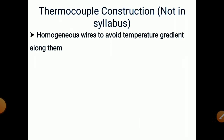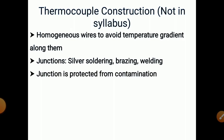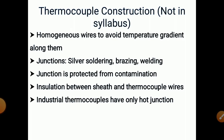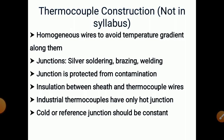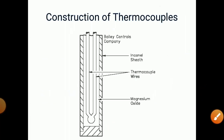For thermocouple construction, homogeneous wires are used to avoid temperature gradient along them. Junctions are provided with silver soldering, brazing, or welding. Junctions are protected from contamination, with insulation between the sheath and thermocouple wires. Industrial thermocouples have only one hot junction, and the cold or reference junction is kept constant. Insulation is provided to protect from contamination.